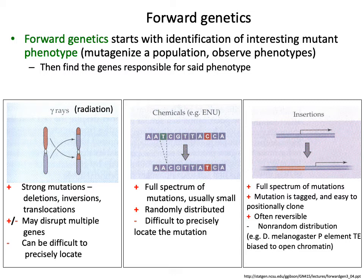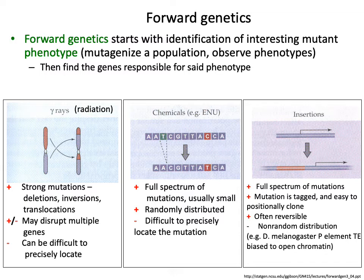For any given individual using gamma rays, you're actually disrupting multiple genes or multiple regulatory elements. This can be beneficial because you don't need to mutagenize that many individuals for your mutations to cover most of the genome. If there's only one gene causing your phenotype of interest, the chances that at least one individual has a mutation covering that gene is pretty high. The downside is that it can be pretty difficult to actually locate the causal gene, because if individuals only have large-scale mutations, you still have the task of figuring out which gene within a large deletion is actually responsible for the phenotype.